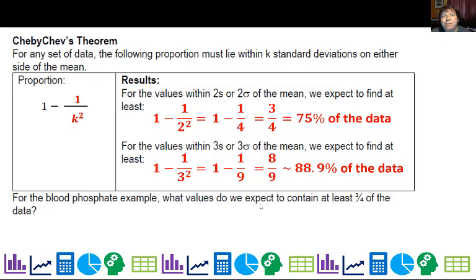So for the blood phosphate example, even though I don't know the distribution, I can tell you what values we expect to contain at least three fourths of the data. Well, first of all, if we want three fourths of the data, that means we're doing two standard deviations away.